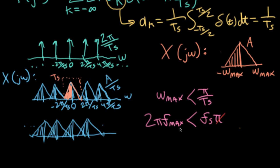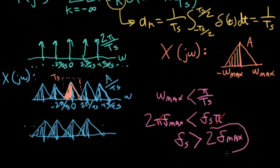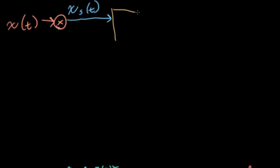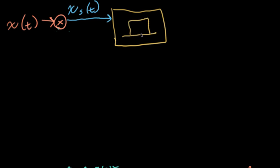And then I could write 2π f max to indicate the highest frequency in Hertz. So the π's cancel, and I wind up with FS needs to be greater than 2 f max. So this is the Nyquist sampling criterion that we reviewed at the beginning of the lecture.